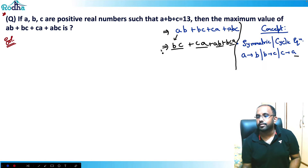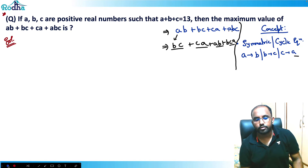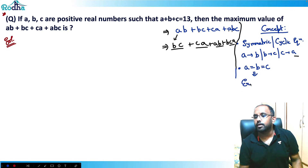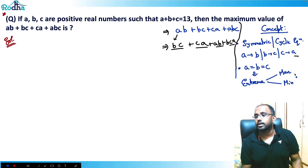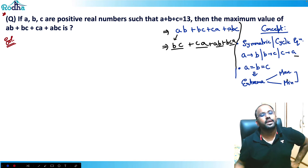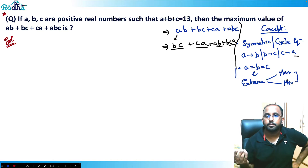So what happens in a symmetric or cyclic equation? Basically, when I equate all the variables in any symmetric or cyclic equation, I will be getting the extrema of that equation. Now, extrema means it could be maxima or it could be minima — I need to check that as per the question. I'll show you how to check, but equating all variables gives extrema.